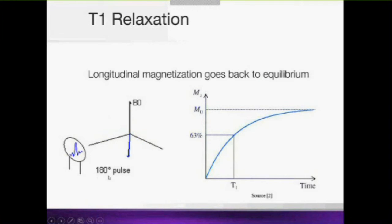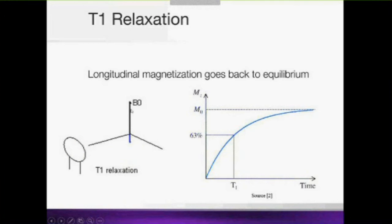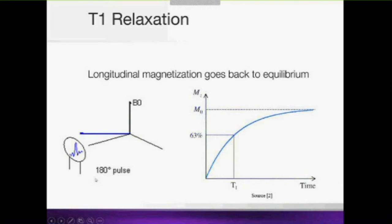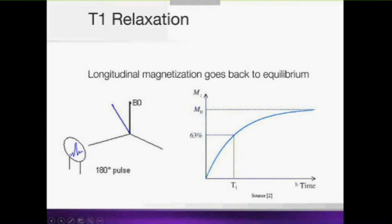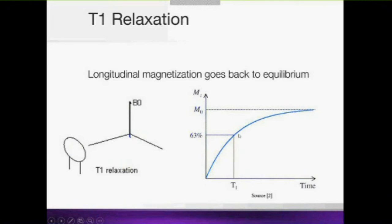We can also apply a 180-degree pulse, which completely rotates and inverts the direction of the spins. They then naturally return to their equilibrium position along the magnetic field through a process called T1 relaxation — which you will all recognize from T1-weighted images. T1 is a relaxation time: it is the time it takes for the signal to progressively and naturally recover to a certain percentage of its maximum equilibrium value.